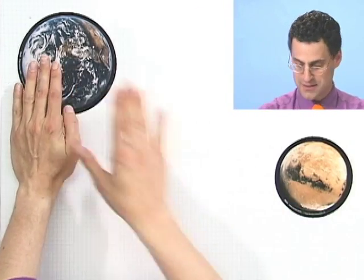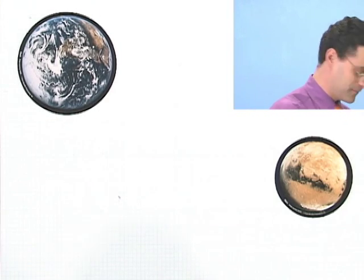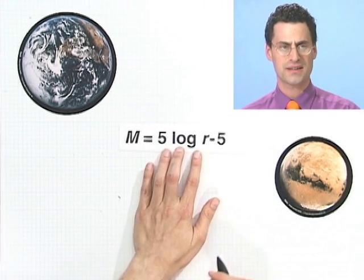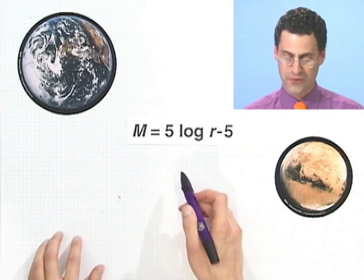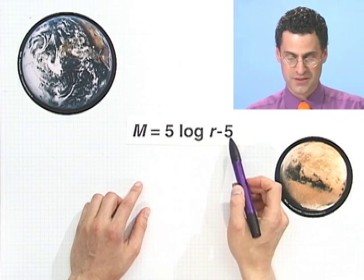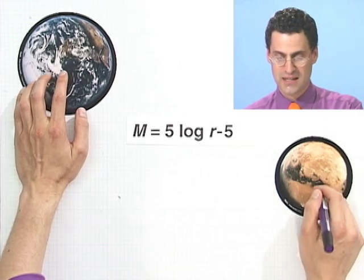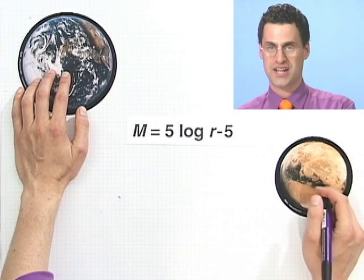So if you want to find the distance between earth and a star, here's the formula. M equals 5 log r minus 5. And what's r? Well, r is the distance in parsecs.